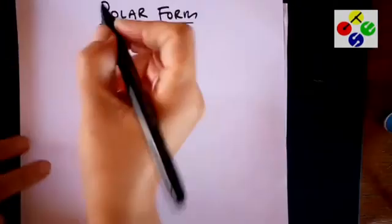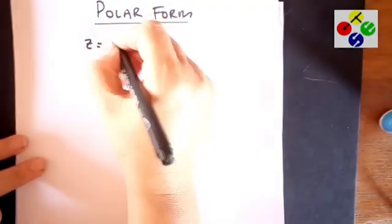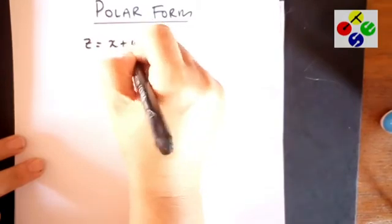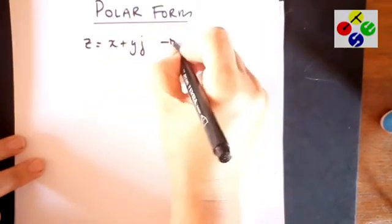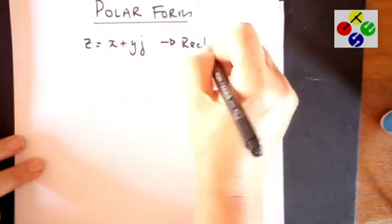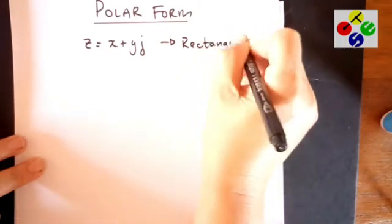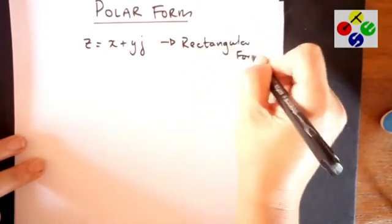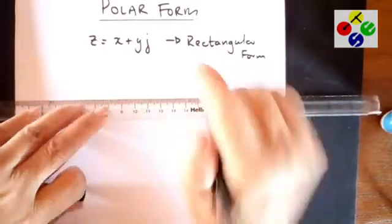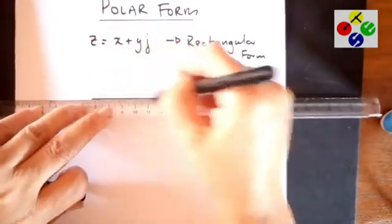Let's say we have a complex number equals x plus yj, and that, you recall, is what we call rectangular form. We can put that onto an Argand diagram.